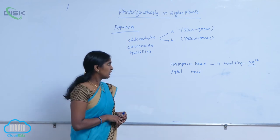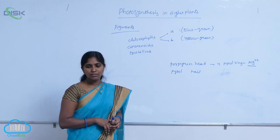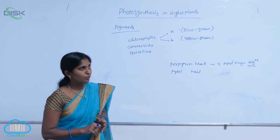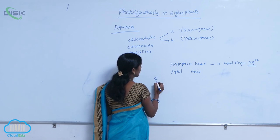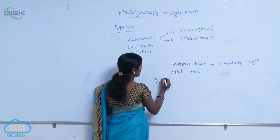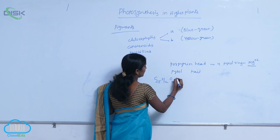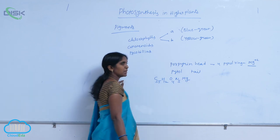The construction is like that. But it has the empirical formula that is C55, H72, O5, N4, Mg. The empirical formula of chlorophyll A is C55, H72, O4, N5, Mg. So the Mg molecule is compulsory here.